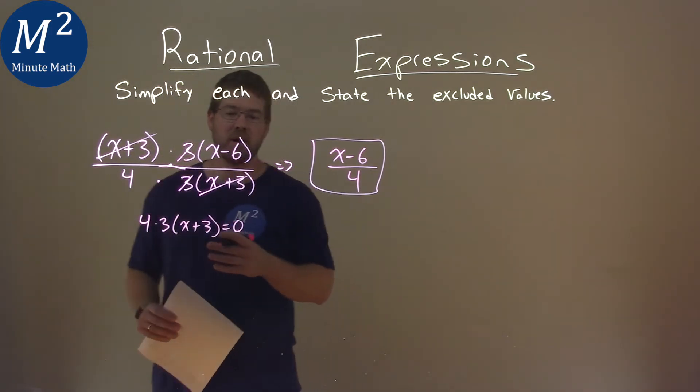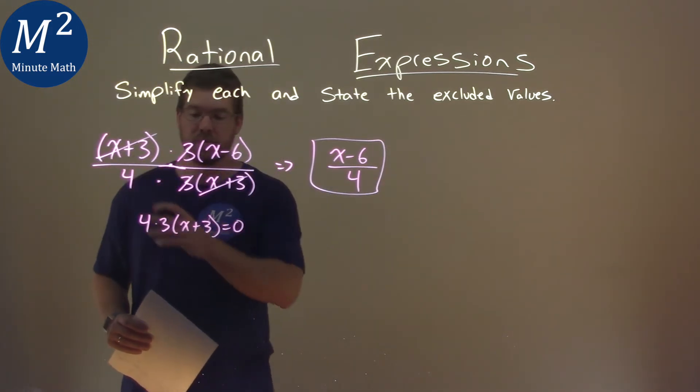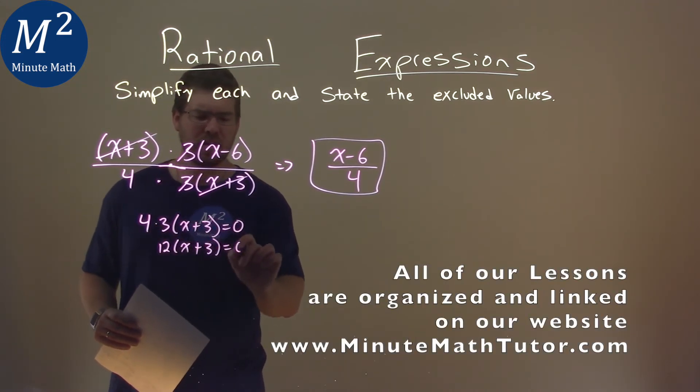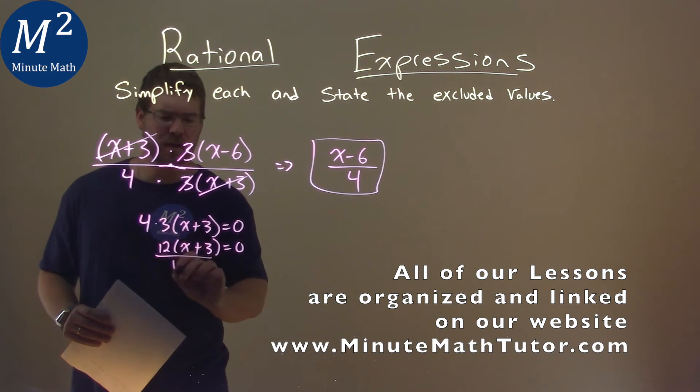We need to find what x value causes this denominator to equal 0. Well, 4 times 3 is 12, but hopefully you can see, to get rid of that, we divide both sides by 12.